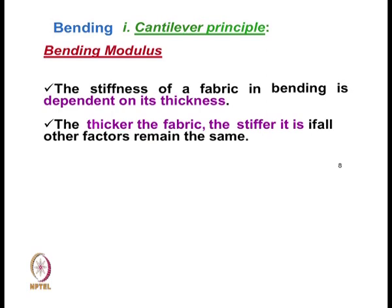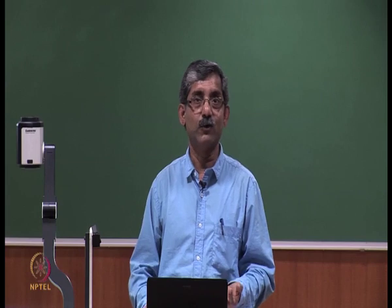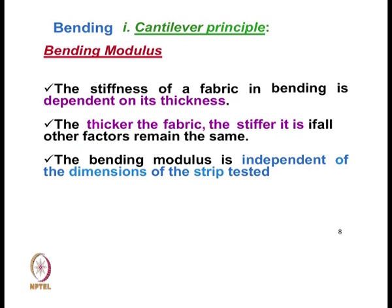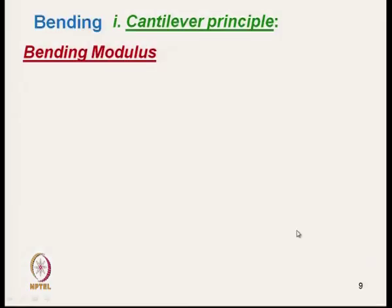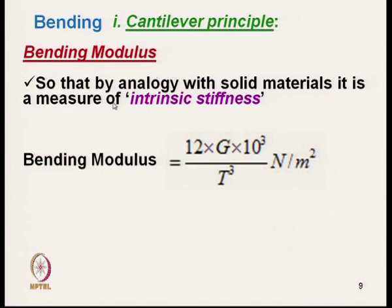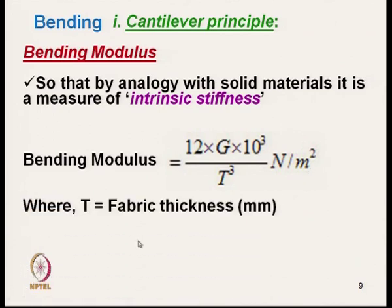If all other factors remain constant, we need a parameter independent of thickness — the bending modulus. By analogy with solid materials, bending modulus is a measure of intrinsic stiffness, independent of the strip dimensions. Bending modulus is expressed as: B = 12G × 10³ / T³, where T is the fabric thickness, giving us the intrinsic stiffness.